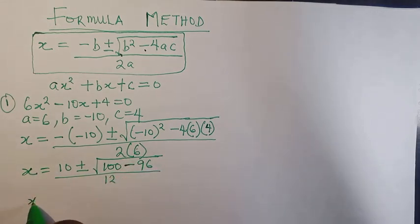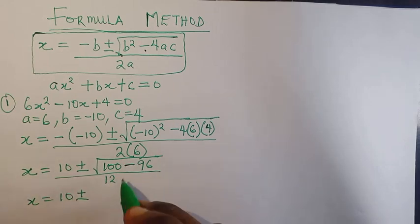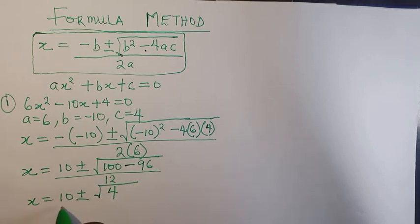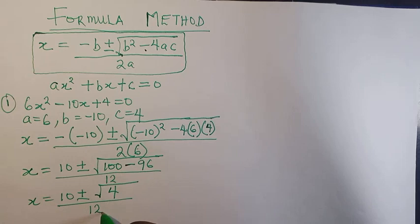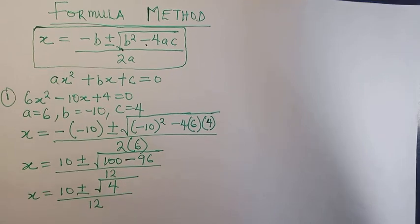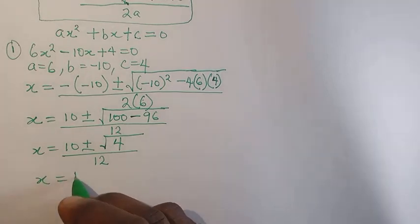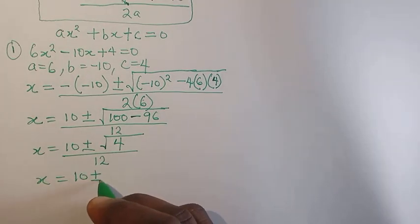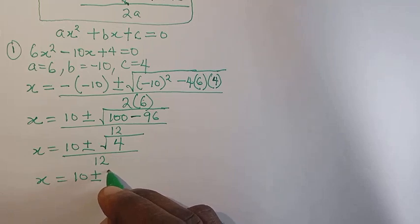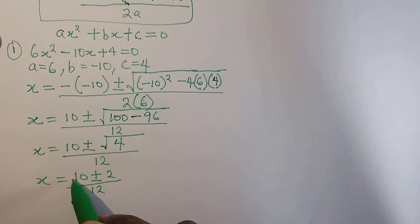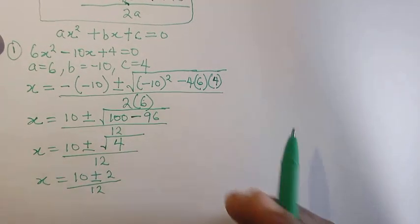So x equals to 10 plus or minus the square root of 100 minus 96, which is 4. So x equals to 10 plus or minus the square root of 4, which is 2, all over 12.